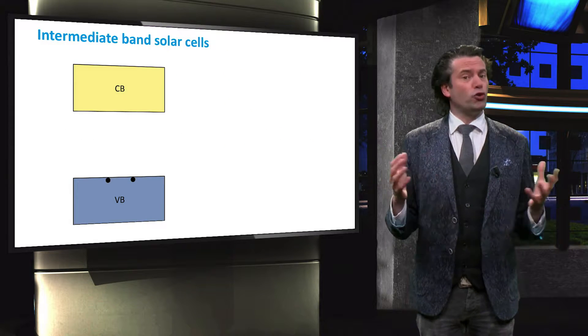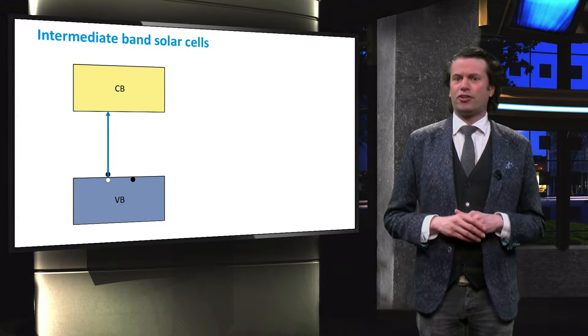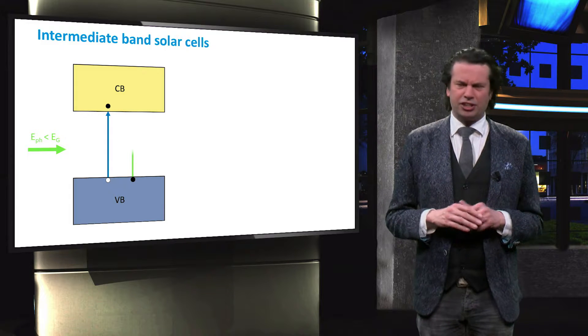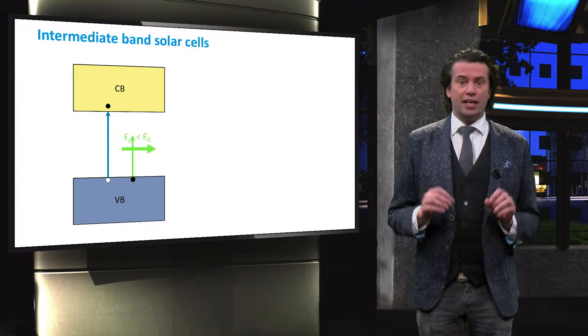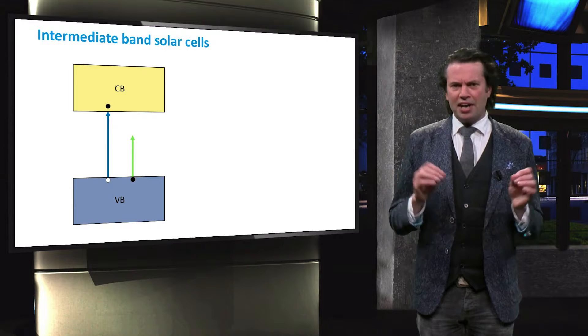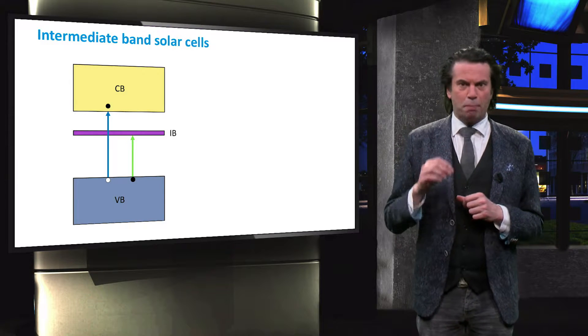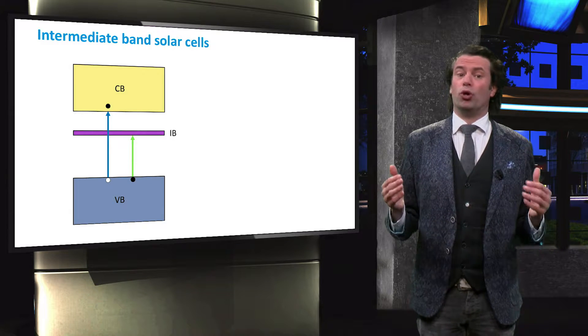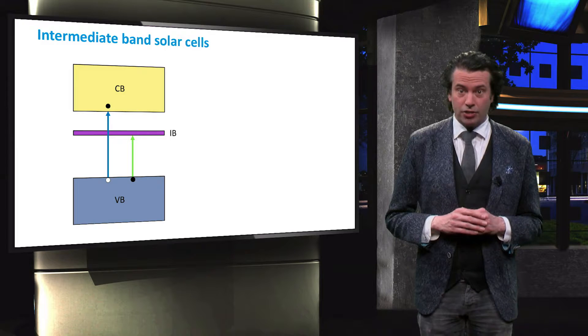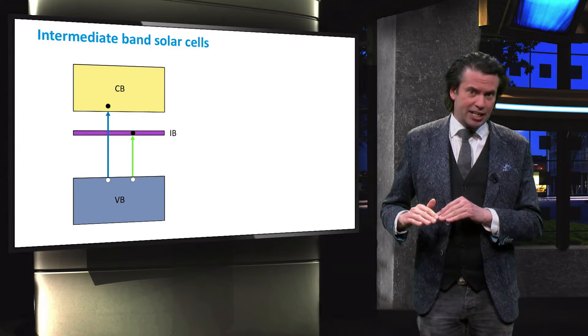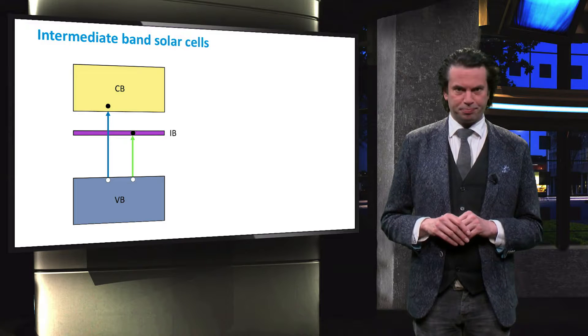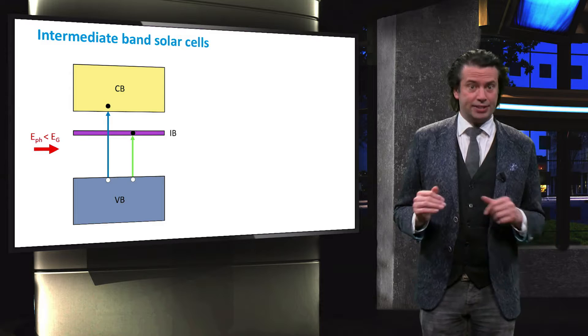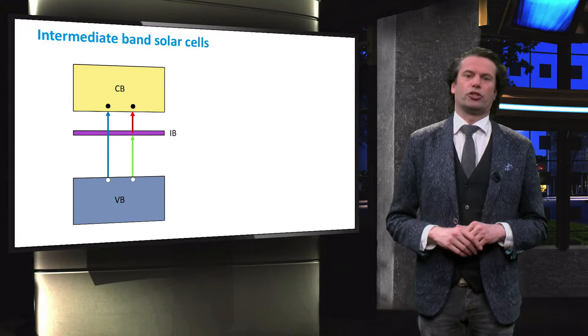Conventionally, photons with sufficient energy can excite an electron from the valence band into the conduction band, and photons with insufficient energy cannot. In intermediate band cells, energy levels are created artificially in the bandgap of the absorber material. Therefore, photons with energies below the bandgap can excite an electron from the valence band into the intermediate band. A second low energy photon is required to excite the electron from the intermediate band into the conduction band.